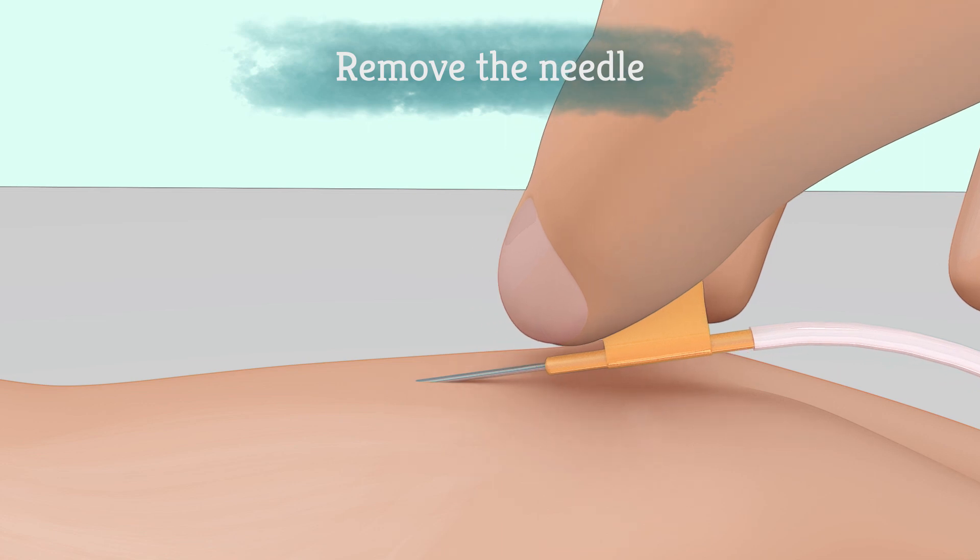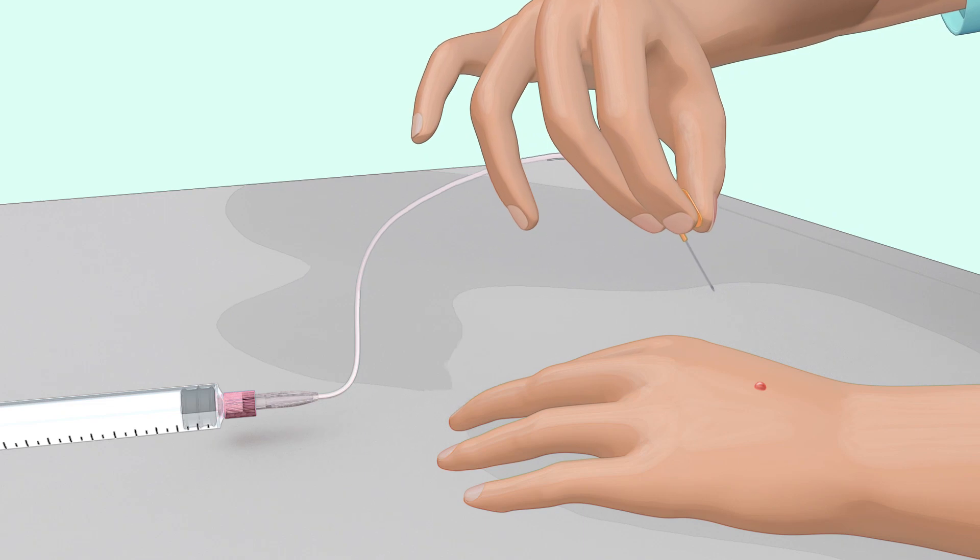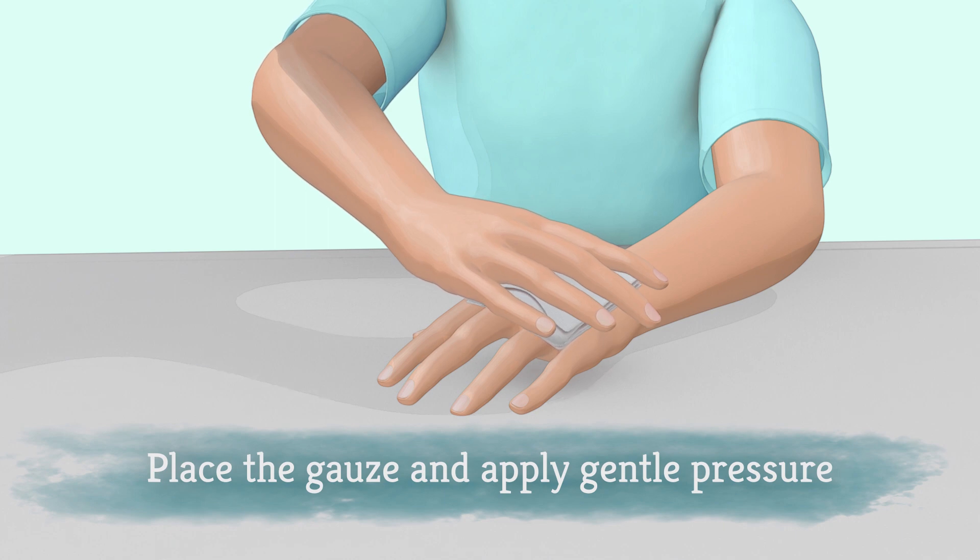When the syringe is empty, remove the needle at the same angle at which you inserted it, and place a gauze pad over the infusion site. Apply gentle pressure over the infusion site for a few minutes or until the bleeding stops.